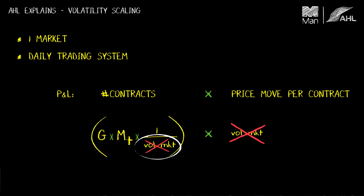In these first two episodes we've seen two key concepts: where the momentum signal comes from and volatility scaling. The next thing we'll do is look at futures contracts, as these are the principal instruments for managed futures trading. Thanks very much.